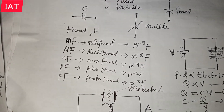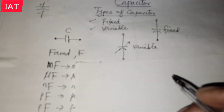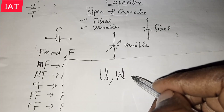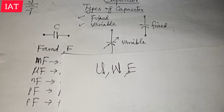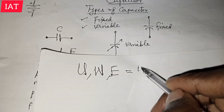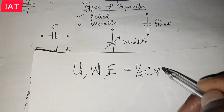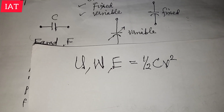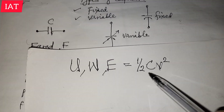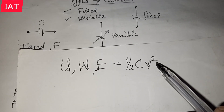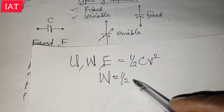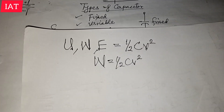Another important quantity is the work done or energy stored in the capacitor. We can use U, W, or E as symbols for energy stored — any of these are allowed. The energy stored in the capacitor is given by the expression: Energy = ½CV², where C is the capacitance and V is the voltage. So W = ½CV², or E = ½CV², or U = ½CV².